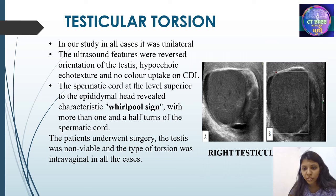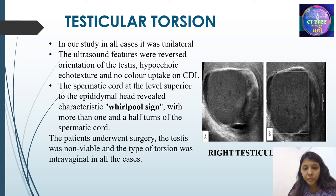Testicular torsion: in our study, in all cases it was unilateral. The ultrasound features were reversed orientation of the testis, hypoechoic echotexture and no color uptake on color Doppler imaging. The spermatic cord at the level superior to the epididymal head revealed a characteristic whirlpool sign with more than one and a half turns of the spermatic cord. The patients underwent surgery; the testis was non-viable and the type of torsion was intravaginal in all the cases.